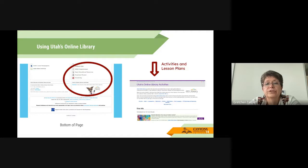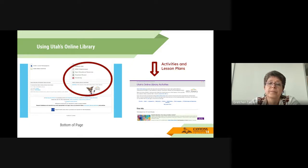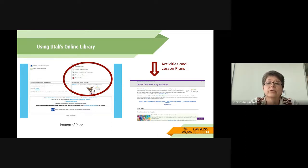Under general resources, you'll notice a dictionary and thesaurus, as well as other tools for finding primary sources, including the Library of Congress, Mountain West Digital Library, the National Archives, and the National Library of Medicine. Open educational resources are also available from UEN, but this could be its own professional development, so we will not cover it at this time. I just wanted to make you aware that this information is available to you as an educator.